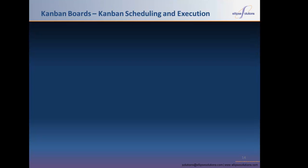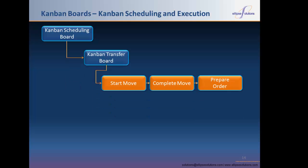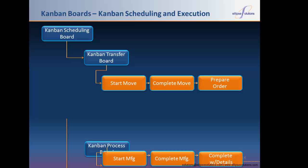Lean manufacturing is visual. In Lean Manufacturing for Dynamics AX 2012, the visual planning and execution of lean manufacturing is done by using electronic Kanban boards. The Kanban Scheduling board allows for the scheduling of production Kanbans by work cells and can also be used as an ANDON board, showing a work cell's overall load and progress. The Kanban Transfer board is used to transfer and receive material, components, and finished products. The Kanban Process board is used to prepare, start, and complete production in a work cell. The Kanban Transfer and Process boards support the use of barcodes to manage Kanban transactions.